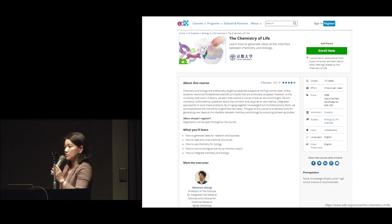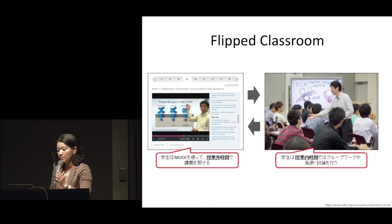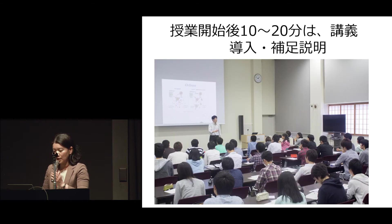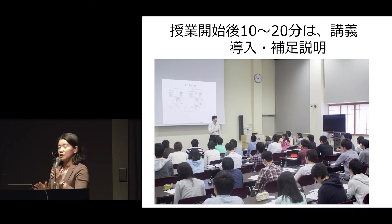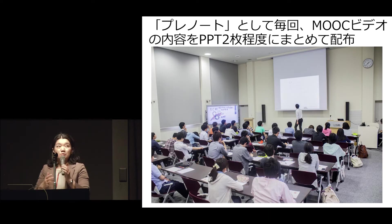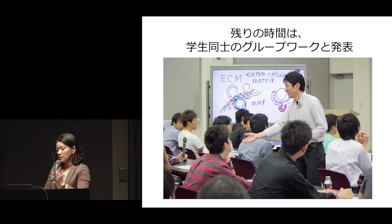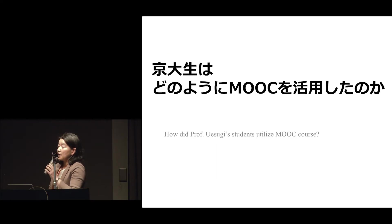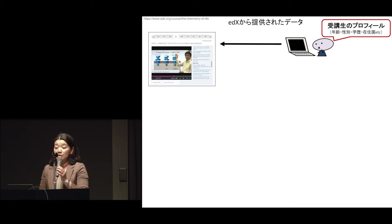As Professor Sakai introduced earlier, one example is the MOOC-based flipped class. Professor Uesugi had in mind to use a MOOC-based flipped class from the very beginning. In the class, he spends some time introducing the course and teaches the core elements to students, also giving additional information not covered by MOOC, then has group work and peer evaluation. In year one, we surveyed how Kyoto U students utilized MOOC. In MOOC, we can access log information such as student profile, which page the student viewed, which problem they solved, and comments and dialogues on the bulletin board.